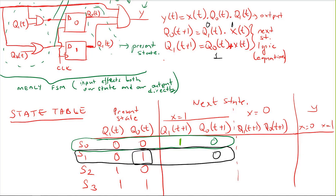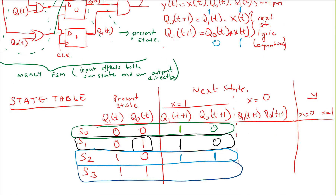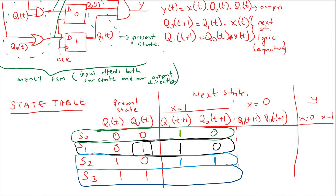Continuing with x=1: for s2 (q1=1, q0=0), q0(t+1) = 1 AND 1 = 1, and q1(t+1) = 0 OR 1 = 1, so next state is 11. For s3 (q1=1, q0=1), q0(t+1) = 1 AND 1 = 1, and q1(t+1) = 1 OR 1 = 1, so next state is 11. That completes the next state column for x=1.